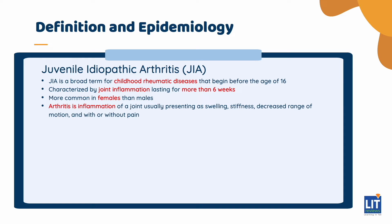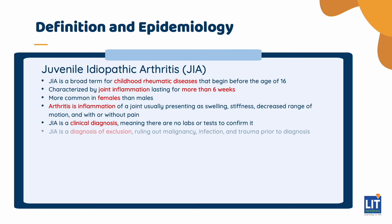Rheumatoid arthritis is no longer used as a diagnosis in children. It is important to note that JIA is a clinical diagnosis, which means that there are no labs or tests to confirm it. Therefore, it is important to recognize the signs and symptoms. JIA is classified based on a diagnosis of exclusion. Therefore, it is necessary to rule out malignancy, infection, and trauma prior to diagnosing JIA.